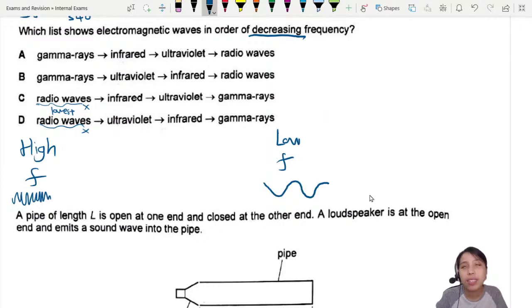and it's the safest also. High frequency is very dangerous usually. So we see gamma ray, okay, very high frequency. So so far we can kill off C and D.